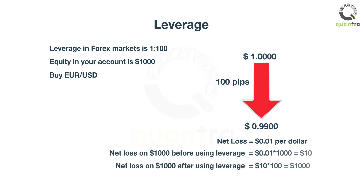The EUR/USD was bought at 1.0000. The current price of EUR/USD is 0.9900. Loss per dollar is $0.01, or 1 cent. Loss on $1,000 of equity with no leverage is $10. Loss on $1,000 of equity with full leverage is $1,000.